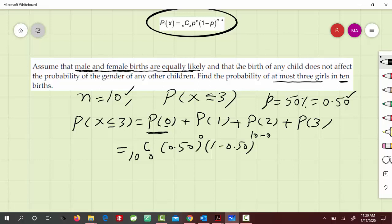Similarly, we write the equation for P(1). That would be 10 choose 1, and then 0.50 to the 1, and then 1 minus 0.50 to the 10 minus 1, which is equal to 9.